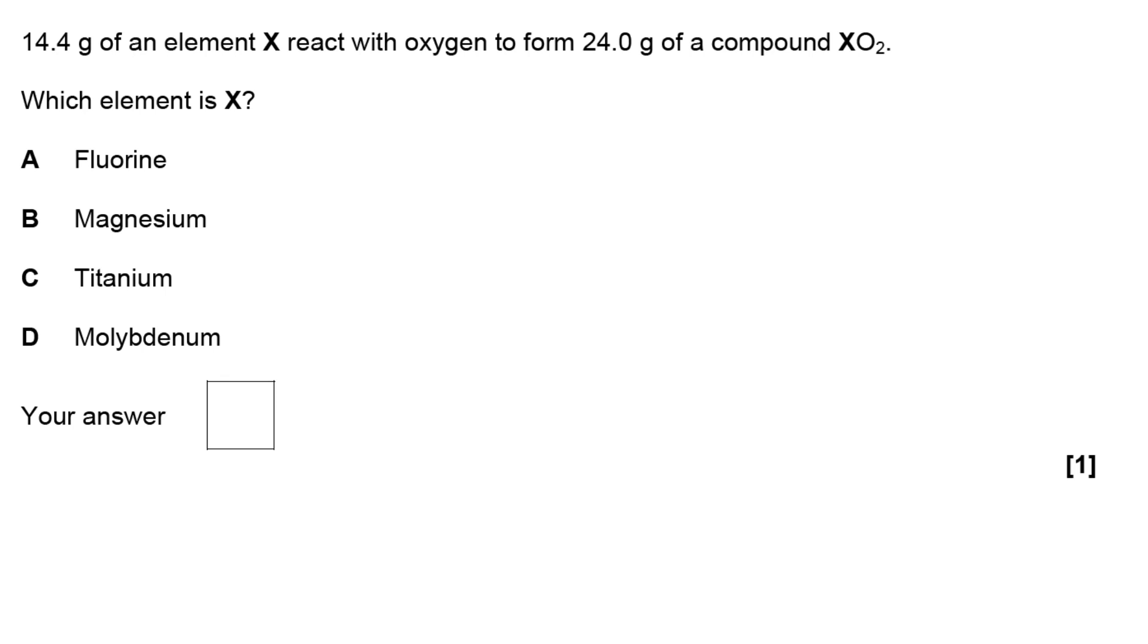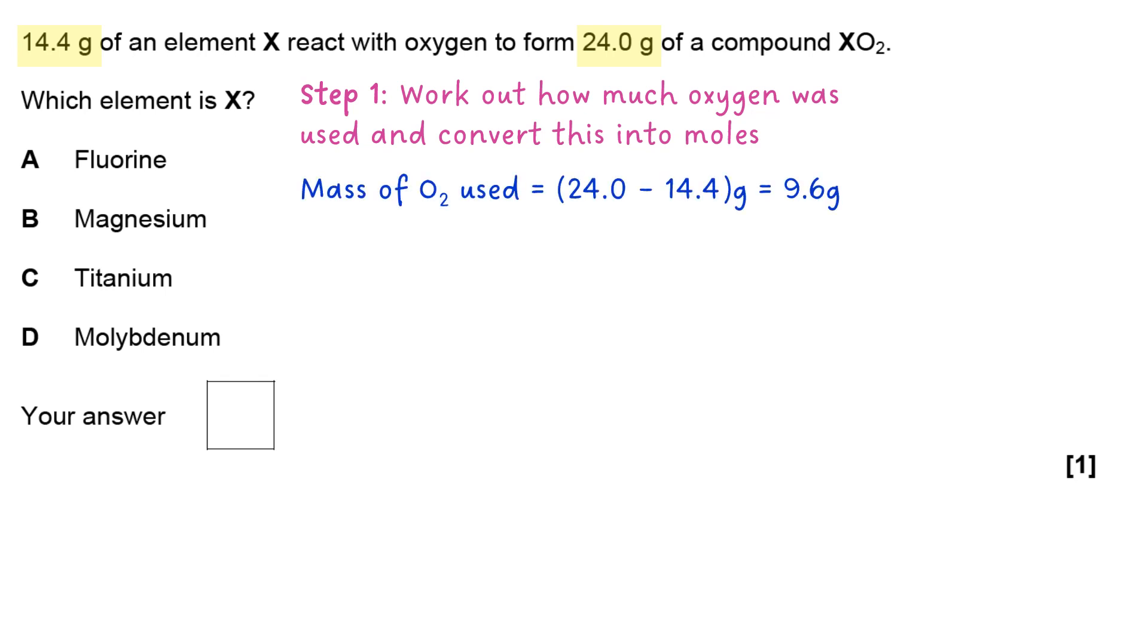So let's start with the data that tells us how much oxygen was used, and you can convert this into moles. You subtract 14.4, which is the element X, from the total mass of the compound XO2 that was formed. The difference between them is 9.6, so that must mean 9.6 grams of oxygen gas was used in the reaction. So you divide 9.6 by 32, remembering that O2 is 32.